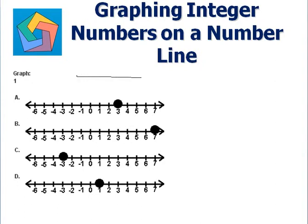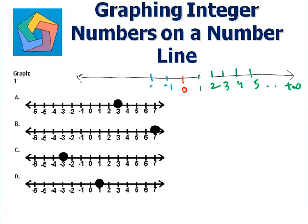Let me draw a line. Zero is placed at the center of this line. Positive numbers on the right-hand side: 1, 2, 3, 4, 5, they continue to positive infinity. And negative numbers on the left-hand side: minus 1, minus 2, minus 3, minus 4, minus 5, and they continue to negative infinity.